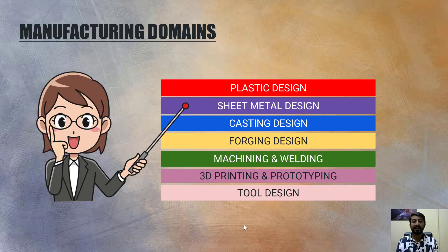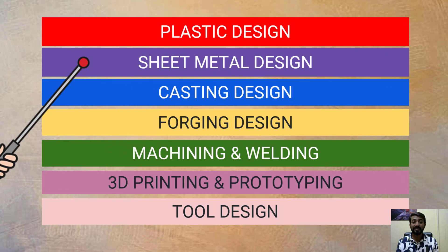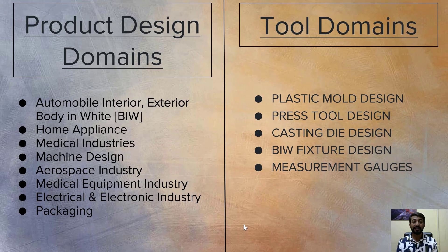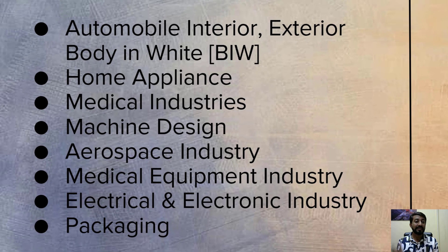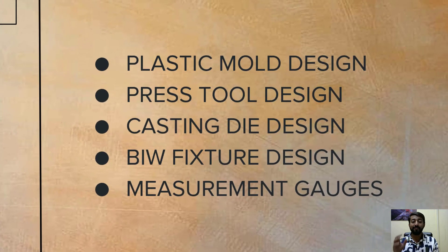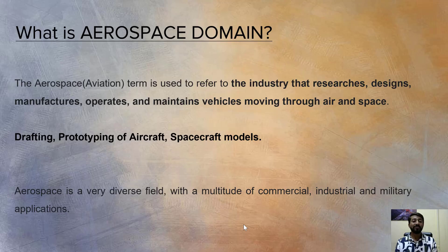Let us focus first on the manufacturing domains. In that we have plastic, sheet metal, casting, forging, machining, welding, 3D printing, and tool design. In manufacturing domain we have two categories: product design domains — which include automobile interior and exterior, body in white, home appliances, medical machine designs, aerospace, medical equipment, electrical/electronic industry, and packaging — and tool domains, which include plastic mold design, press tool, casting, fixtures, and measurement gauges.